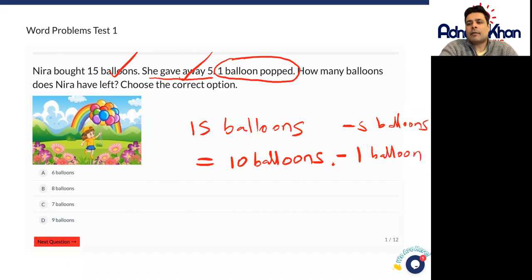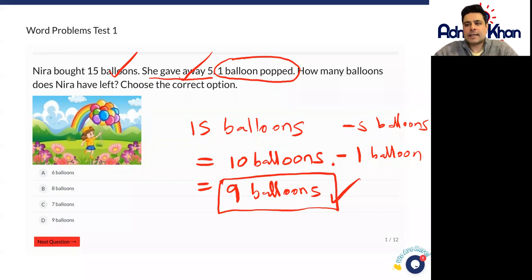And that will then give us nine balloons left. So how many balloons does Nira have left now? I make it nine balloons left in total.